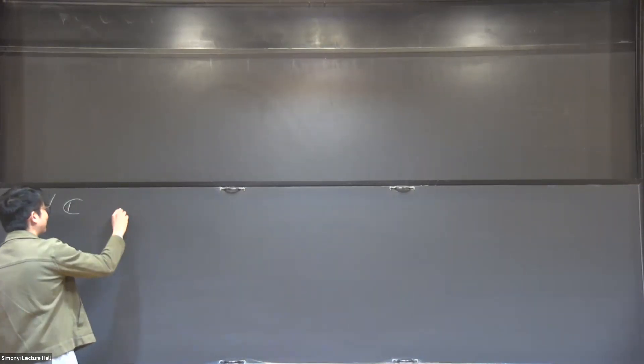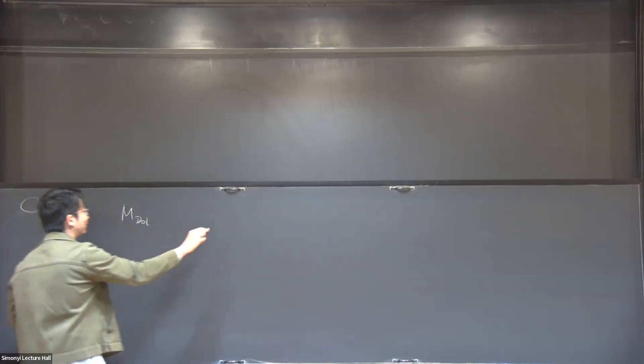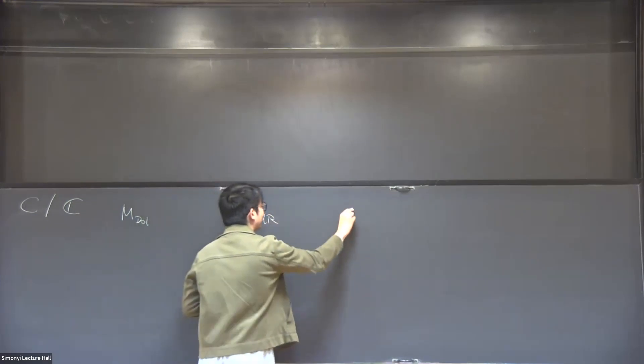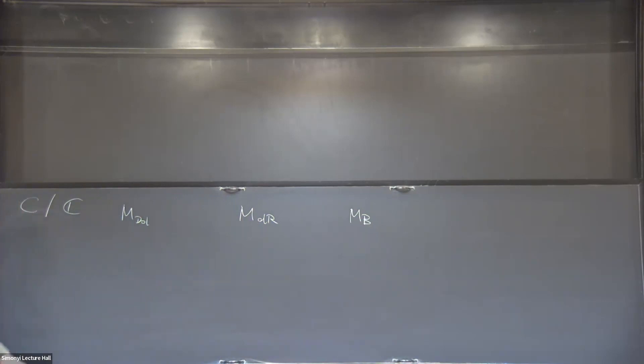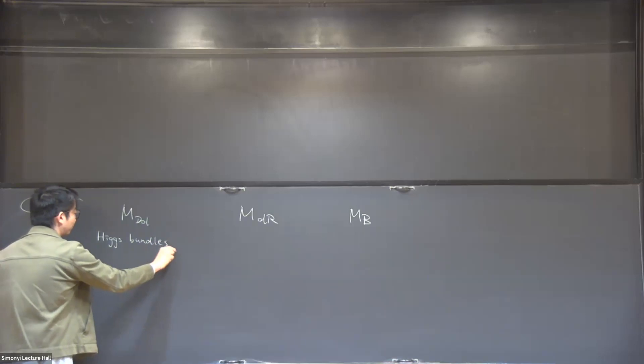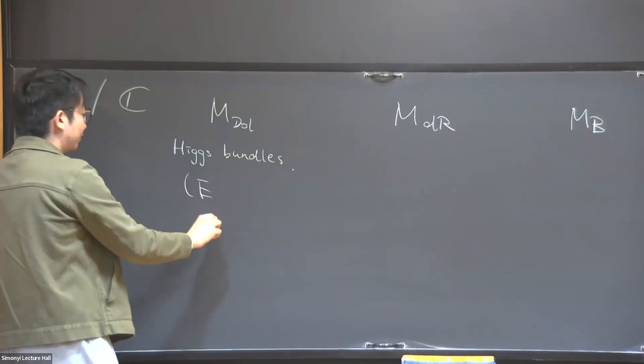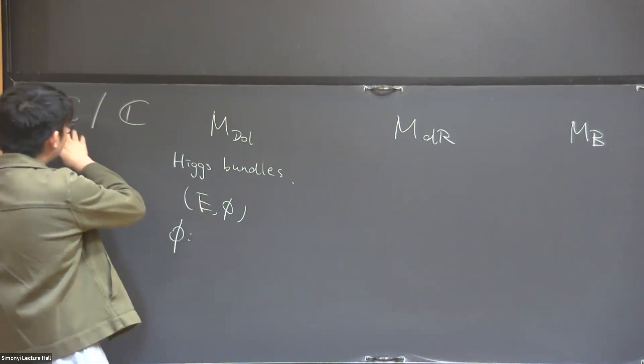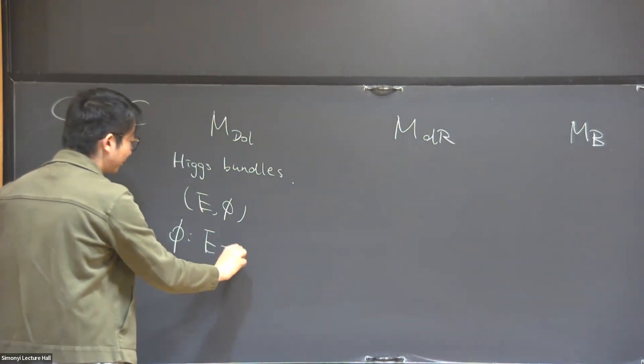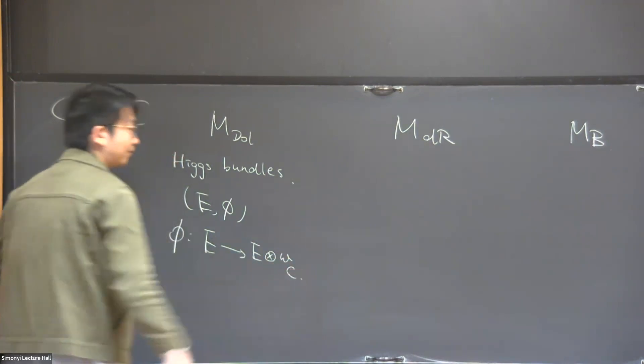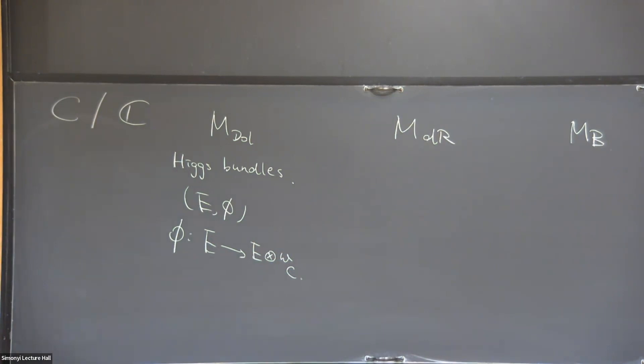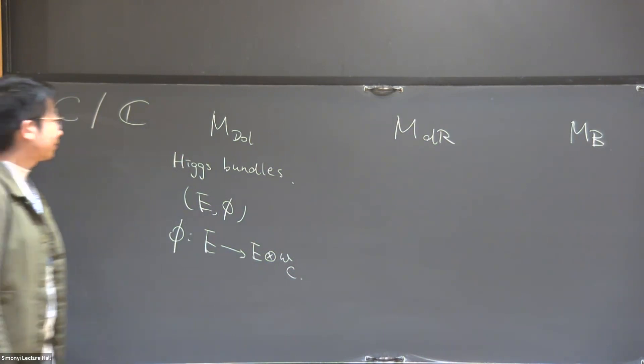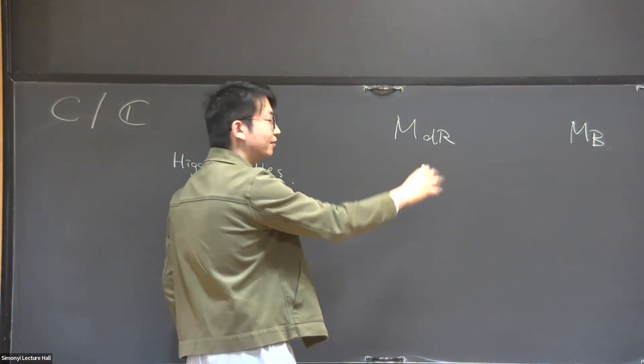The non-abelian Hodge theorem is about three different holomorphic moduli spaces, quasi-projective. They are called the Dolbeault moduli space, the de Rham moduli space, and the Betti moduli space. They each parameterize some objects over the curve. For the Dolbeault moduli space, they parameterize the so-called Higgs bundles on the curve. A Higgs bundle is a pair (E, θ) where E is a vector bundle and θ is an O_C linear morphism from E to E tensor omega_C, the canonical sheaf of the curve.